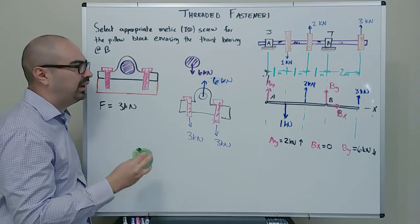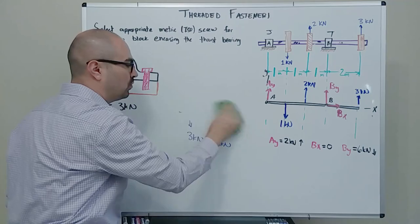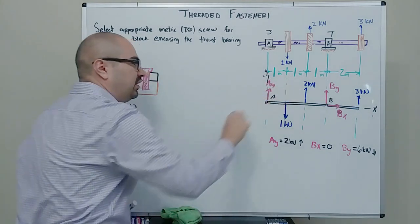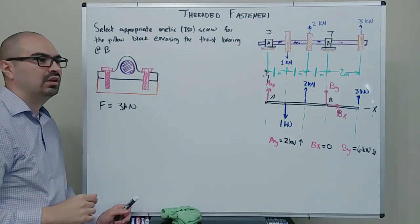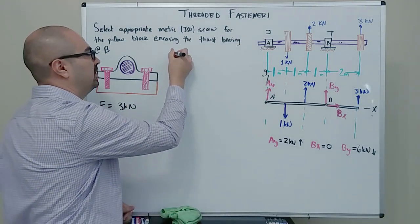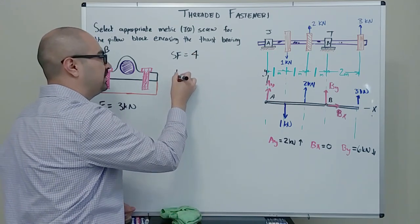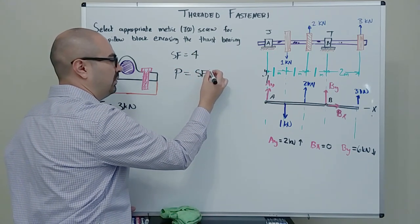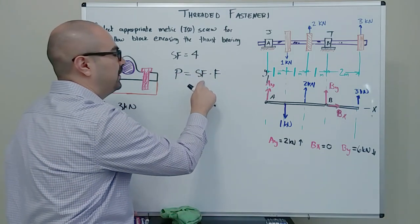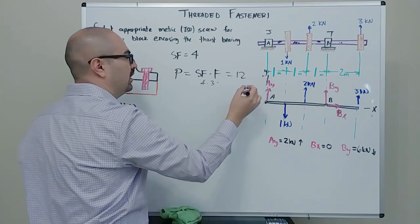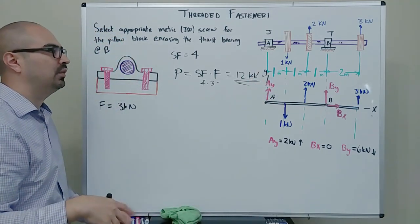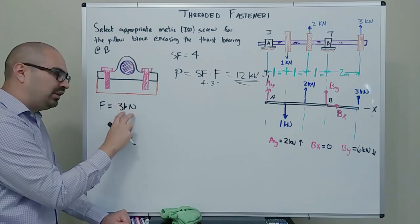When we design things we don't just use the applied force — we use design overloads. We know from the statics that each bolt sees three kilonewtons, but we want to add a factor of safety. If we use a factor of safety of four, then the design overload is simply the safety factor times the force on the bolt: four times three is twelve kilonewtons. So we'll size the bolt as if it's going to feel twelve kilonewtons, even though in actuality it will probably just see three kilonewtons.